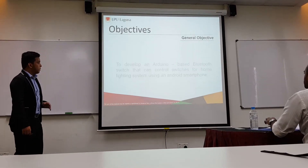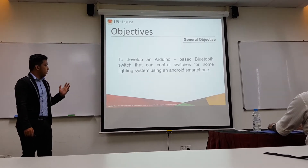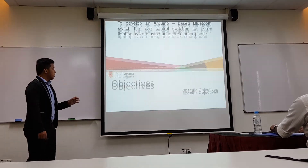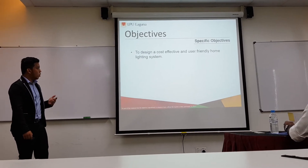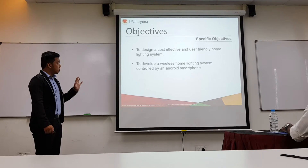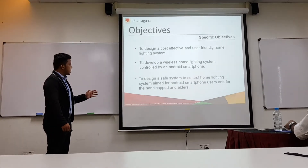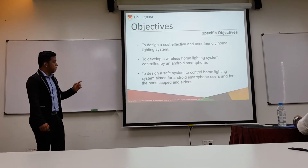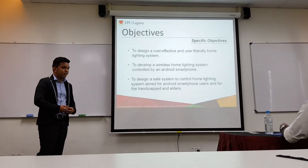For the general objective: to develop an Android-based Bluetooth switch that can control switches for a home lighting system using an Android smartphone. For the specific objectives: we have to design a cost-effective and user-friendly home lighting system, to develop a wireless home lighting system controlled by an Android smartphone, and lastly, to design a safe system to control the home lighting system for Android smartphone users and for the hardware vendors.